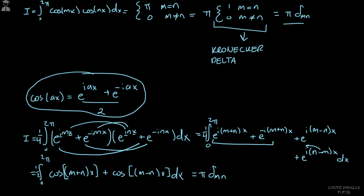So whenever you see an integral from 0 to 2π of two trig functions of the same type — sine times sine or cosine times cosine — you should know it evaluates to π·δ_mn. In the next video, we'll look at what happens when we have sine times cosine, and you'll see how this is useful for the Fourier series. Stay tuned, thank you guys.